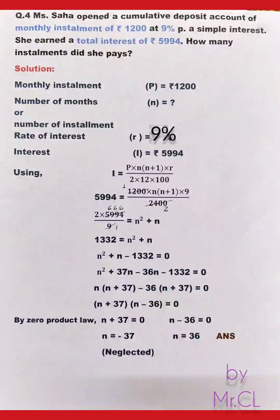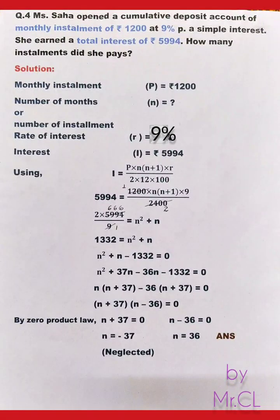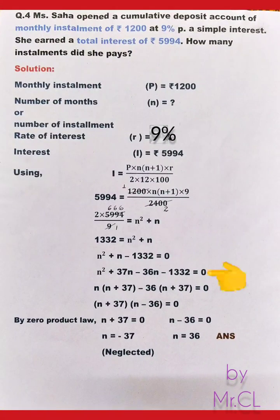To solve the quadratic equation, we multiply the first and last terms: n² × 1332 = 1332n². We need two factors of 1332 whose sum or difference equals the middle term coefficient +1. We find 36 × 37 = 1332 and 37 − 36 = 1. So: n² + 37n − 36n − 1332 = 0.